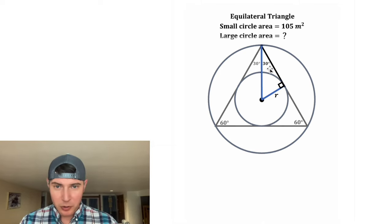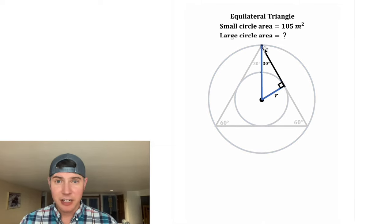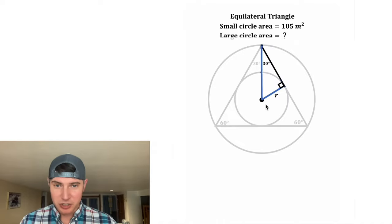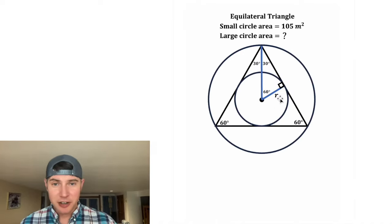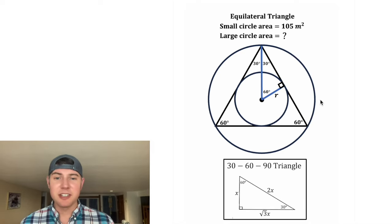Now if we focus on this triangle right here, the sum of the interior angles of any triangle is 180 degrees, which leaves us 60 degrees for the last angle. So this right here is a special right triangle — it's a 30-60-90 triangle.